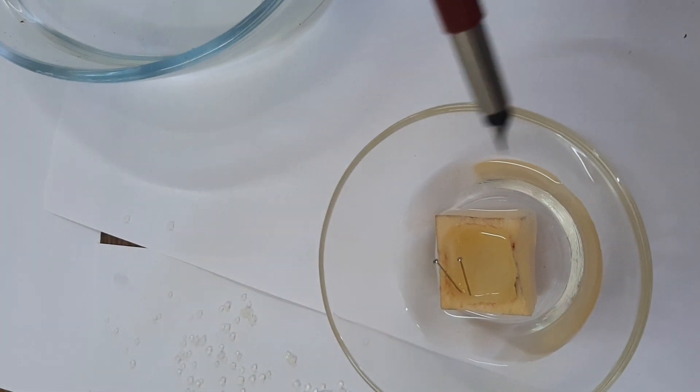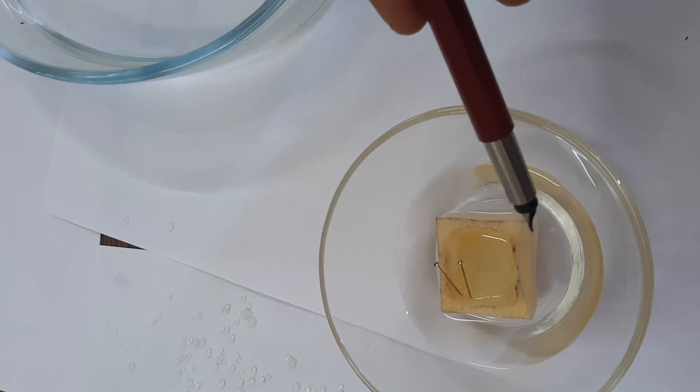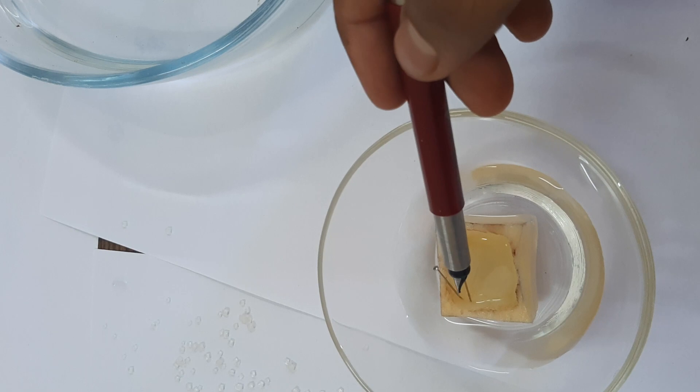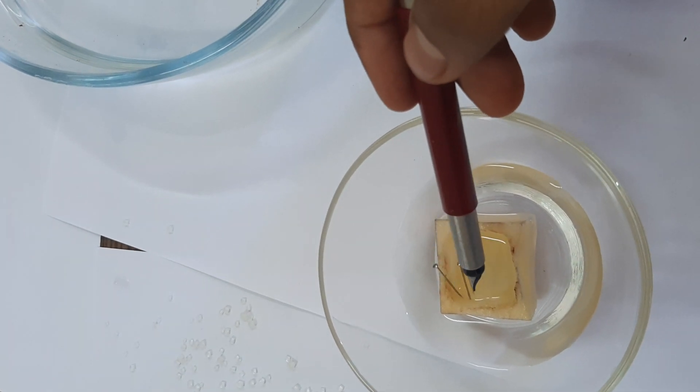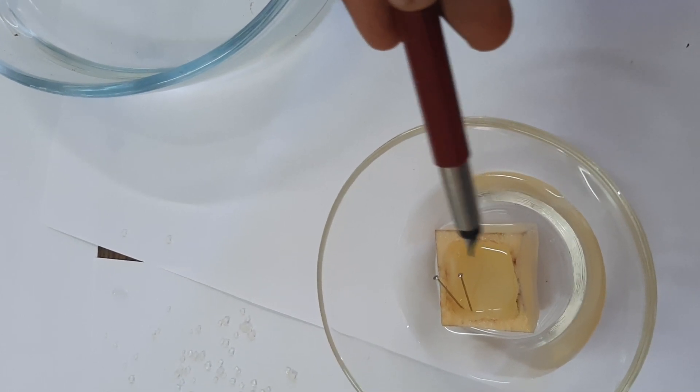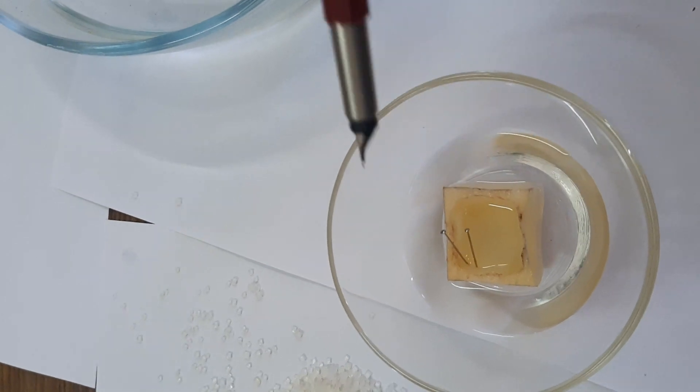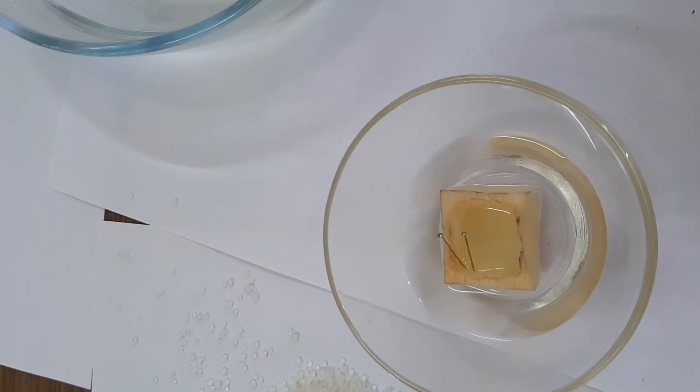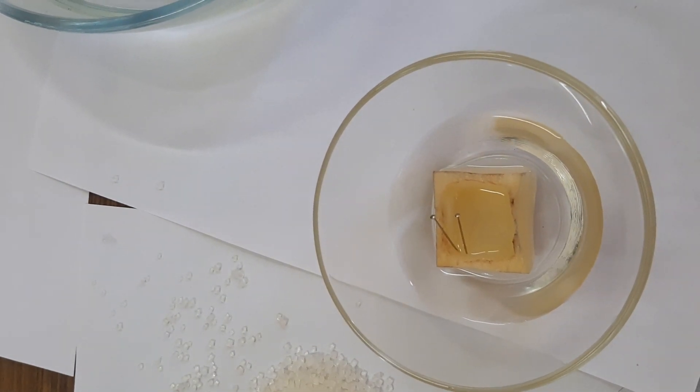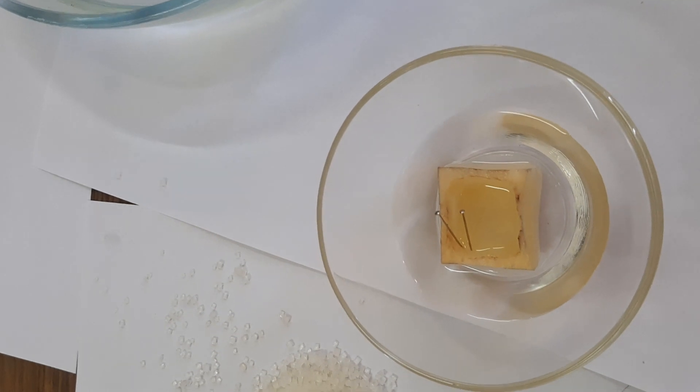After almost 20 to 25 minutes, water from outside having more concentration moved into the potato having low concentration. Now you can see the difference of the level of the water inside the potato osmometer. That proves the activity of osmosis - that water always moves from the region of higher concentration to the region of lower concentration. This is the function of the cell membrane. Thank you.